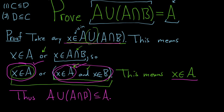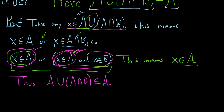Now we have to go backwards. We have to show that if X is in A, then X is in that union. So let's go this direction. We'll start by saying: suppose X is in A.